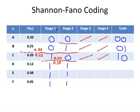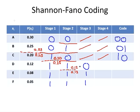Now for D, E, and F — let's partition this up. We'll partition it here: 0.12 above, 0.13 below. D gets 0, and below gets 1 and 1. D is finished — it is coded as 1, 1, 0.